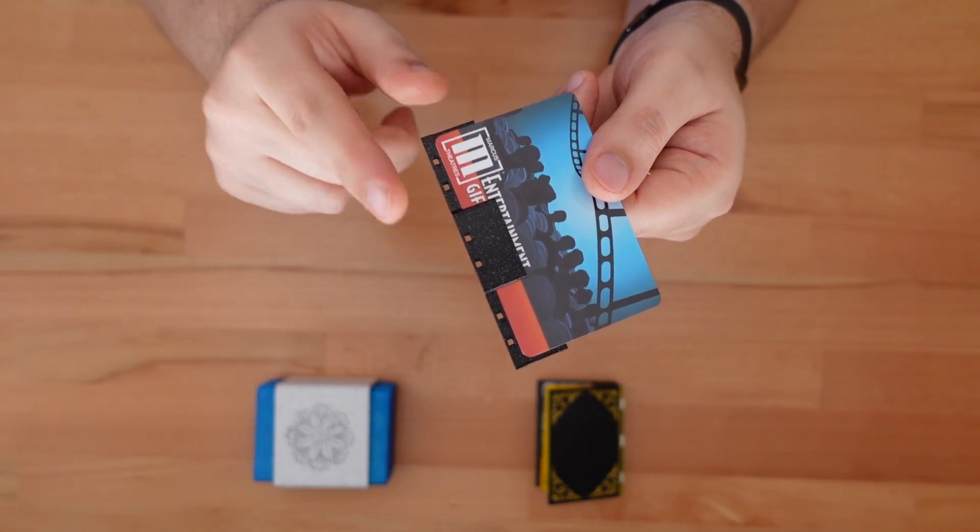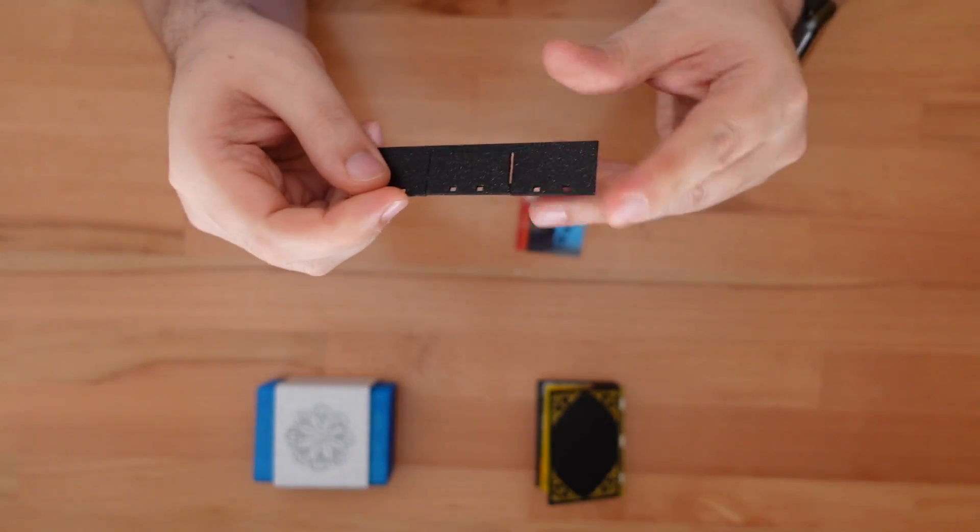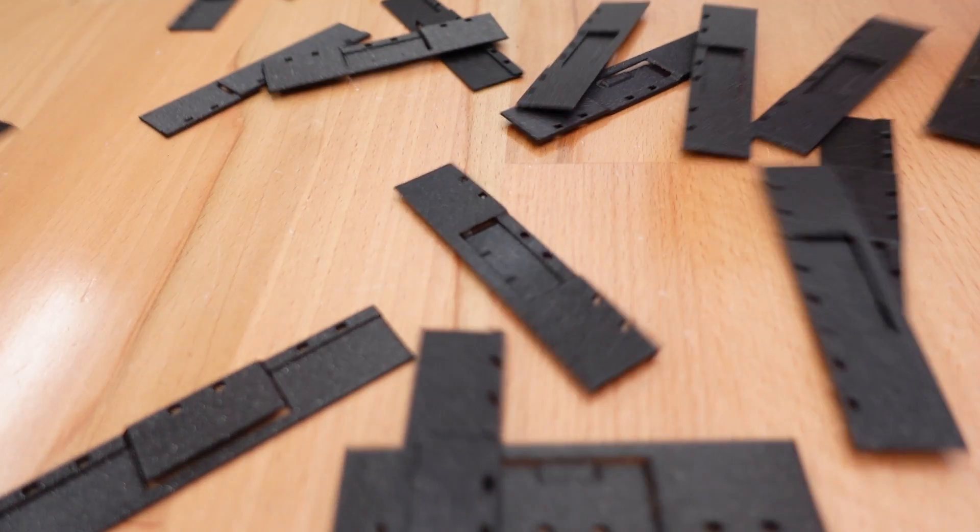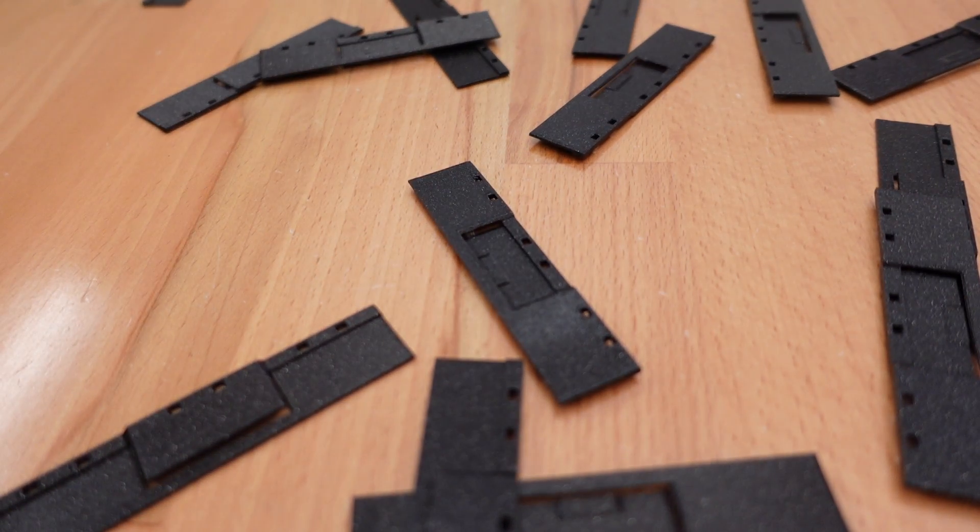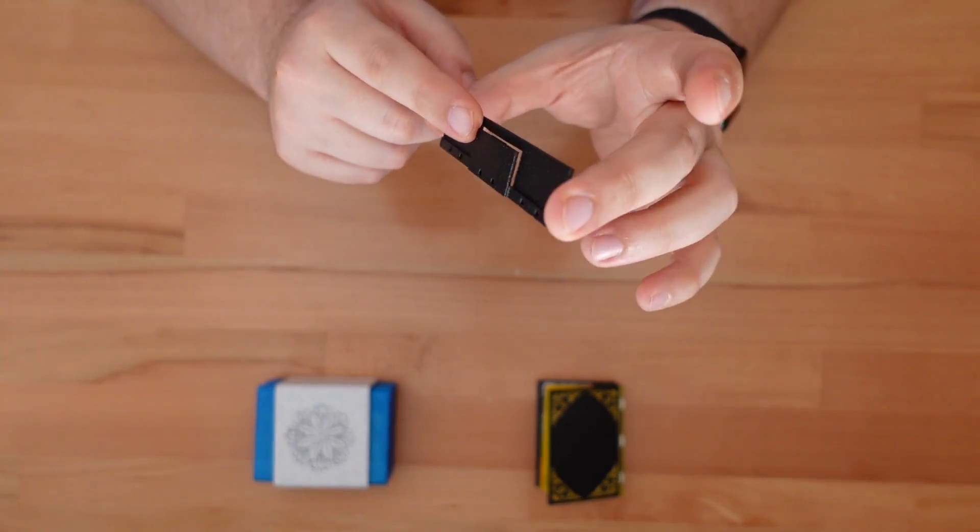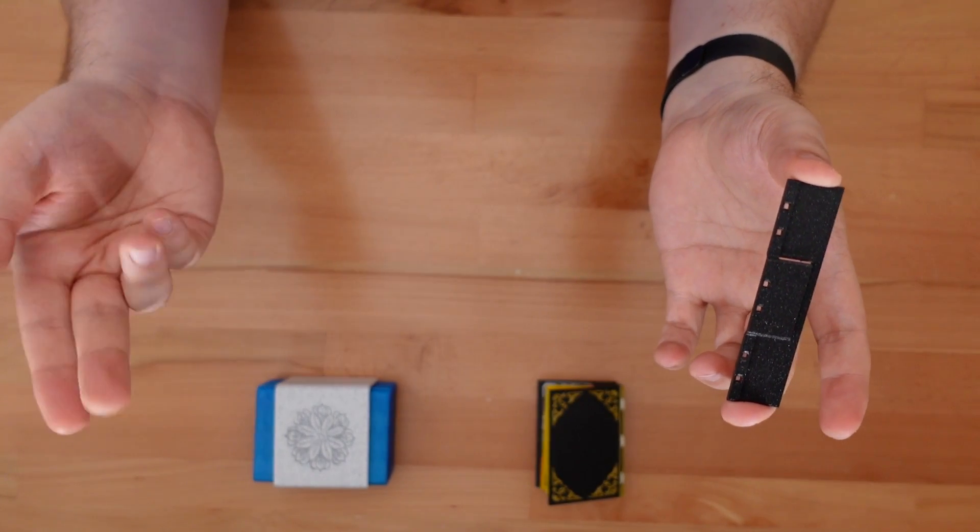The wallet is made out of a bunch of mini stackable inserts. Each one takes only about 30 minutes to print, so make as many or as few as you need for the cards you want to hold. These inserts are printed vertically and require no supports. Although they are quite thin, so a brim wouldn't hurt.